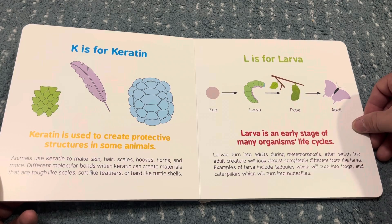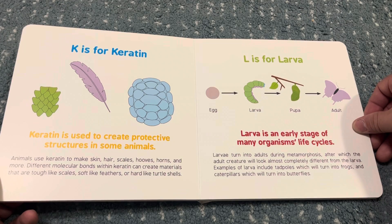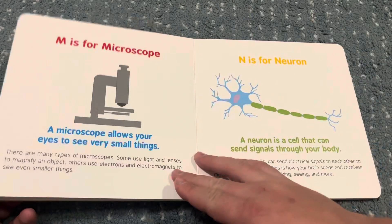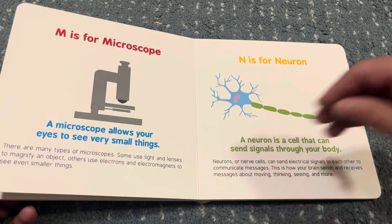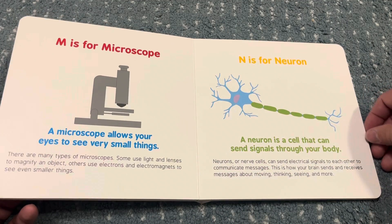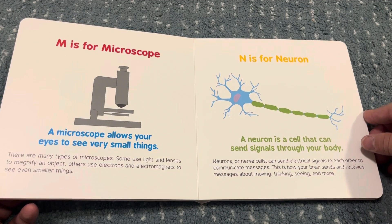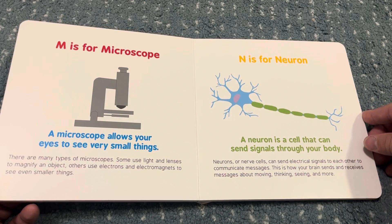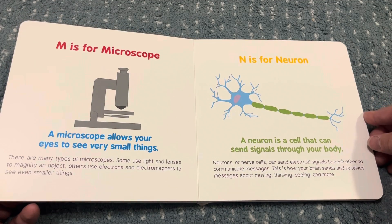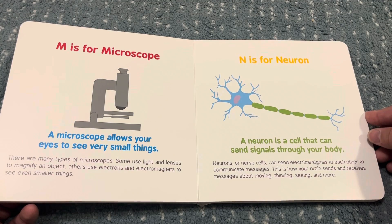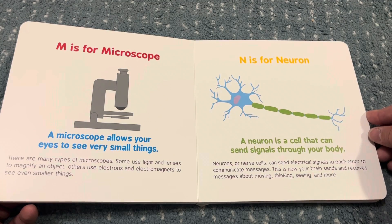L is for larva. Larva is an early stage of many organisms' life cycles. M is for microscope. A microscope allows your eyes to see very small things. N is for neuron. A neuron is a cell that can send signals through your body.